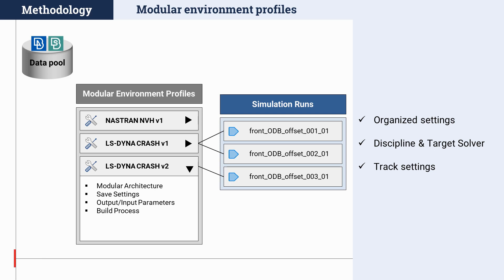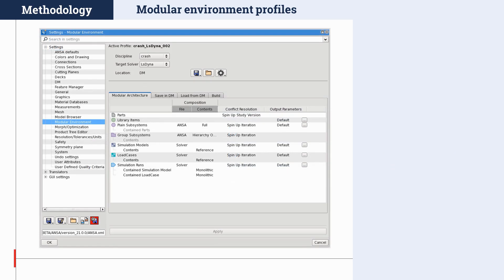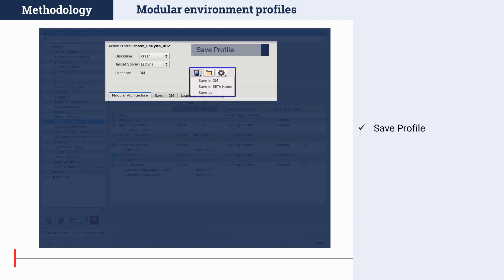For example, there can be two profiles for durability discipline — one using Nastran as the target solver and one using LS-Dyna. Another profile can be created for NVH with Nastran and another for safety with LS-Dyna. Modular environment profiles are stored in file-based DM as new DM objects. When using DM, profiles are version controlled and every change made in their settings is automatically reflected as a new version in DM. The moment the model container is saved, a reference link is created with a modular environment profile DM object, making the modular environment aware of the exact settings used. For moments when a connection to DM is not available, modular environment profiles can also be retrieved from the user's beta home folder.